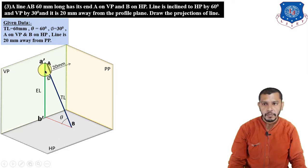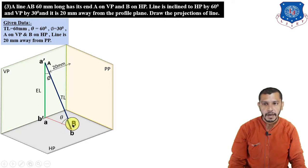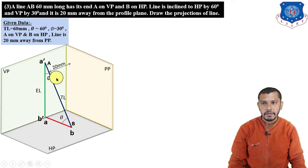Draw a line perpendicular to the horizontal plane from A to get plan point A. Since B is on HP, the plan of B is exactly at B itself. Connecting A and B gives the plan length. Since the profile plane is given, we can also draw the side view. Draw projection lines perpendicular to the profile plane from A and B to get A'' and B''. Connect A''B'' to get the side view.